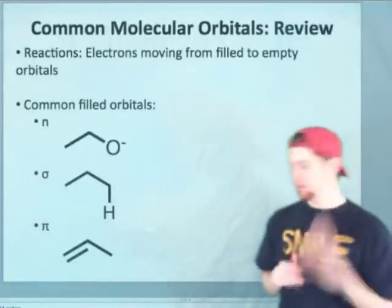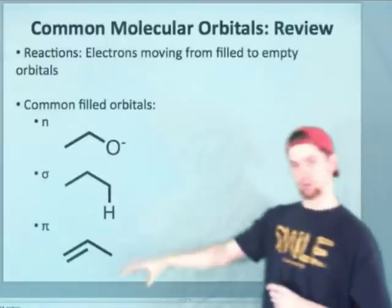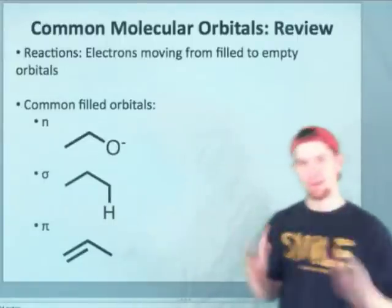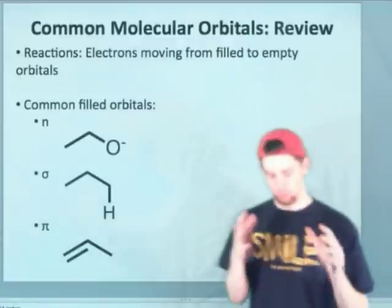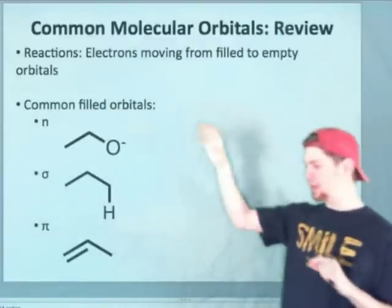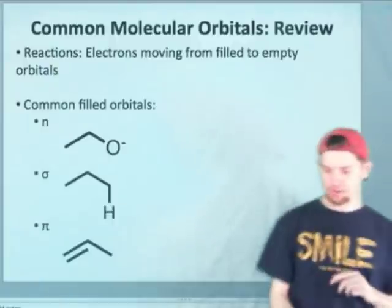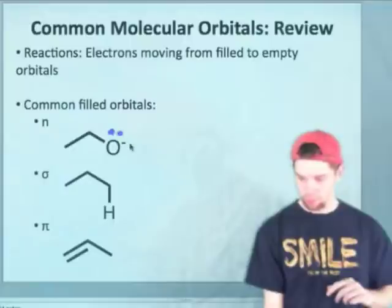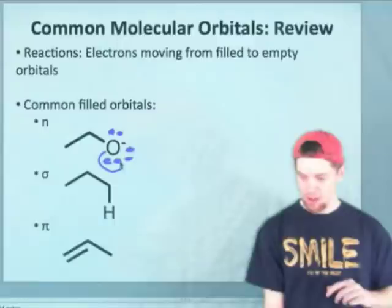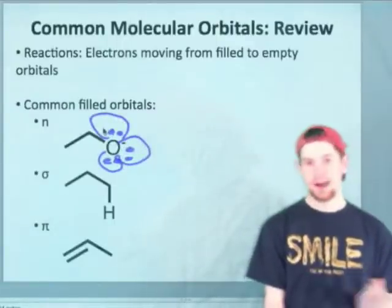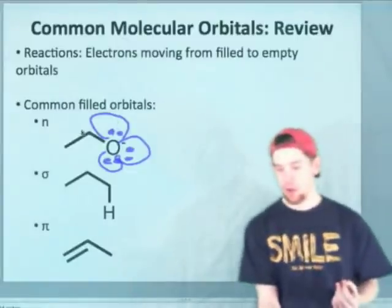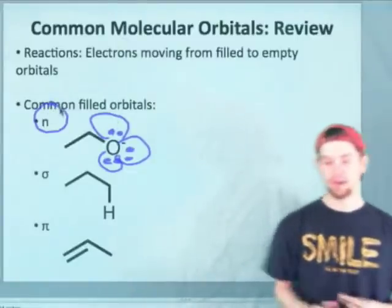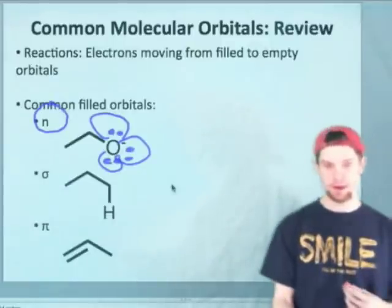If you take a look here, these are the common filled orbitals—the three common filled molecular orbitals. And they correspond basically with Lewis structural elements that you've already seen. So the n orbital, for instance, on this alkoxide, hopefully you can recognize, corresponds to one of the lone pairs. So the alkoxide has three lone pairs, and they're all in n or non-bonding hybrid orbitals. You might see these called simply hybrid orbitals or non-bonding orbitals. All those really refer to the same thing—this n orbital, a non-bonding pair of electrons.